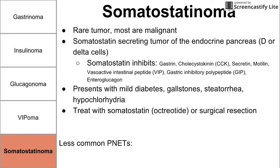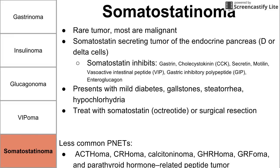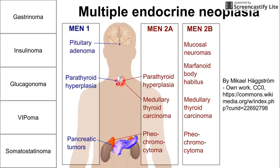It's also worth mentioning some less common PNETs, including ACTHoma, CRHoma, calcitoninoma, GHRHoma, CRFoma, and parathyroid hormone-related peptide tumors — tumors that secrete a peptide acting like PTH, called PTHrP. There is also a helpful slide reviewing the multiple endocrine neoplasias (MEN) relevant to some of these endocrine tumors, mostly fitting with the pancreatic tumors of MEN1 — an association worth knowing.